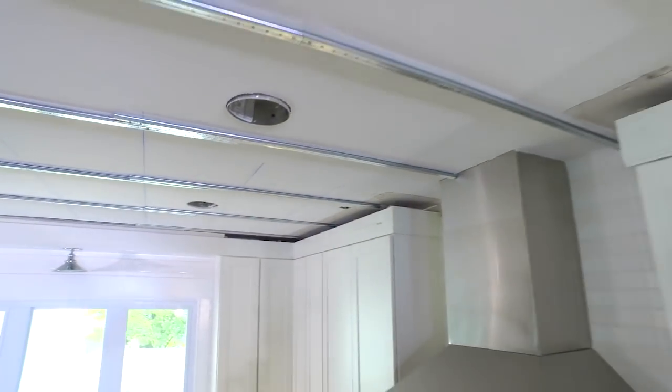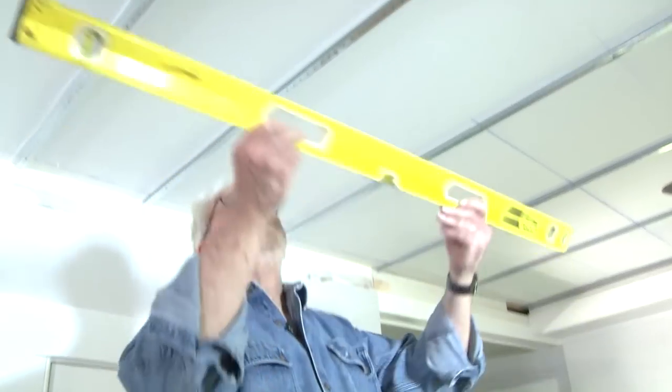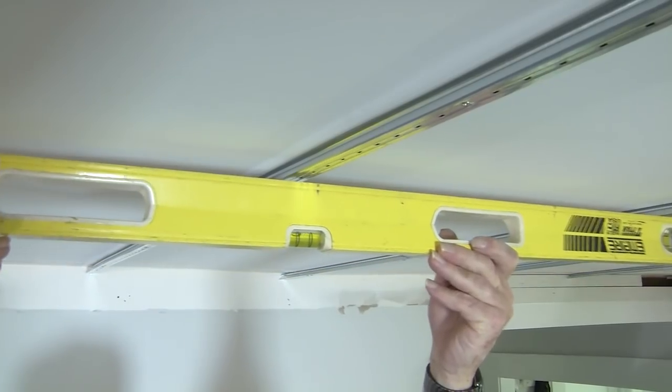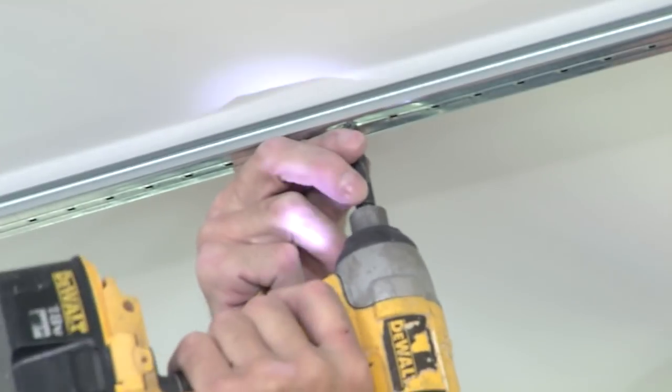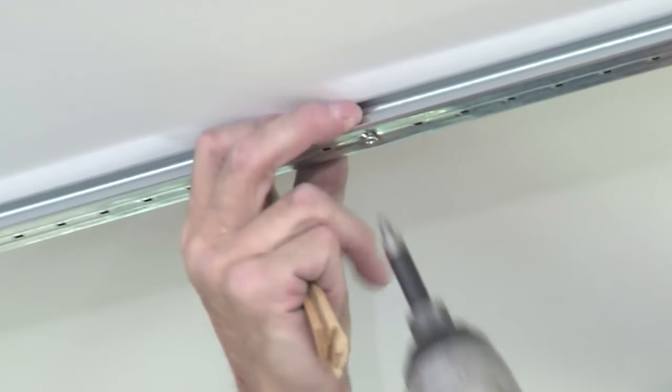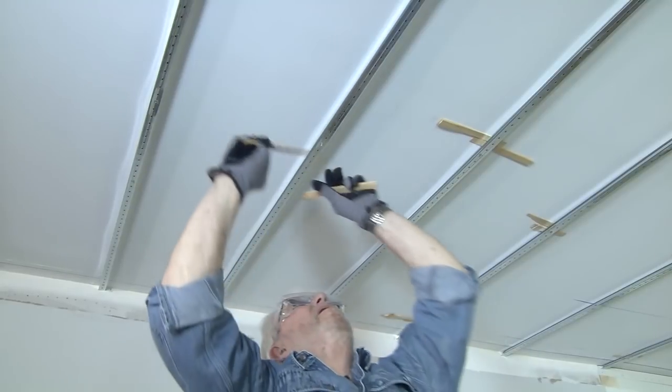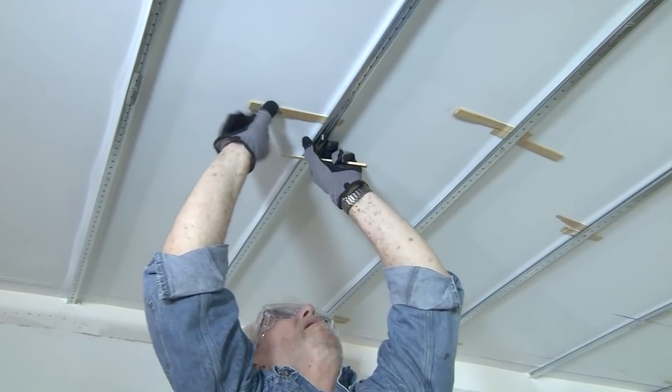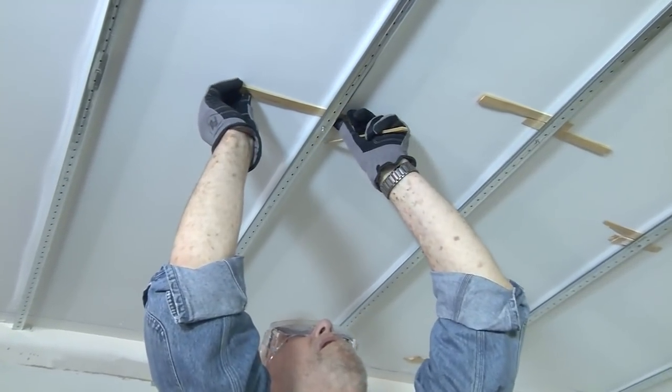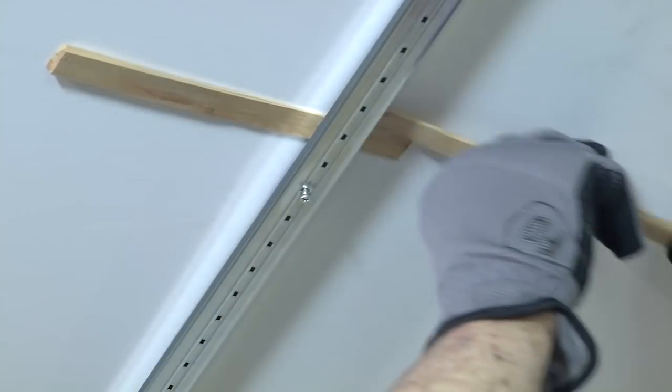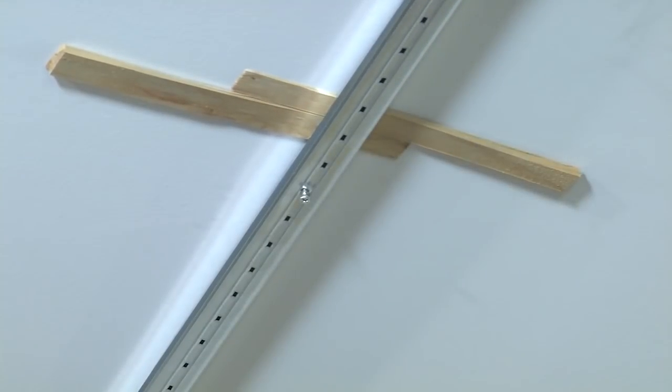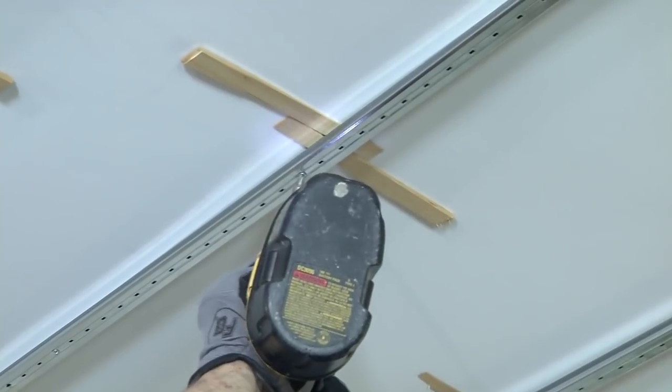Now, it's important that the track system be flat. A 4-foot level is used to locate spots where the track is bowing upward toward the ceiling. In those spots, the mounting screw is loosened and the track pulled downward. Shims are inserted in the space between the track and the ceiling and the screws re-tightened.